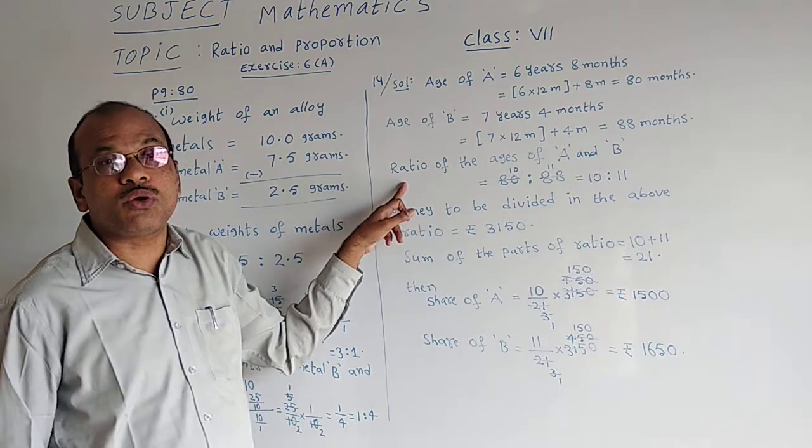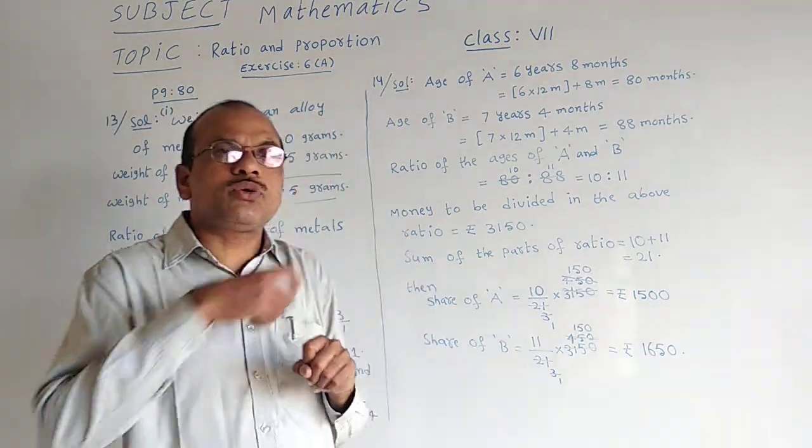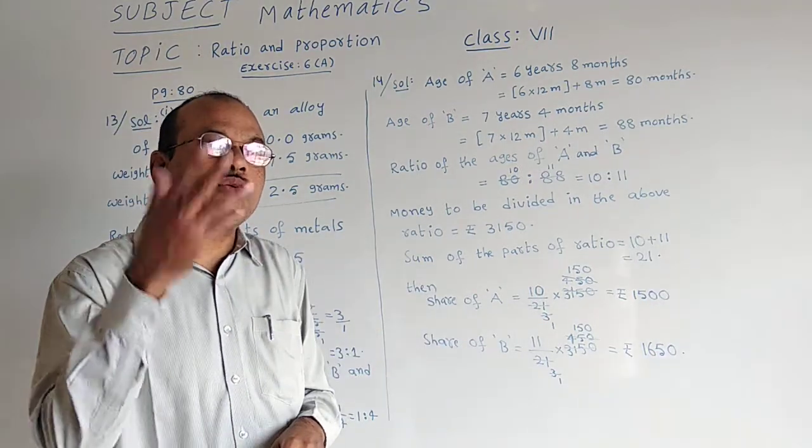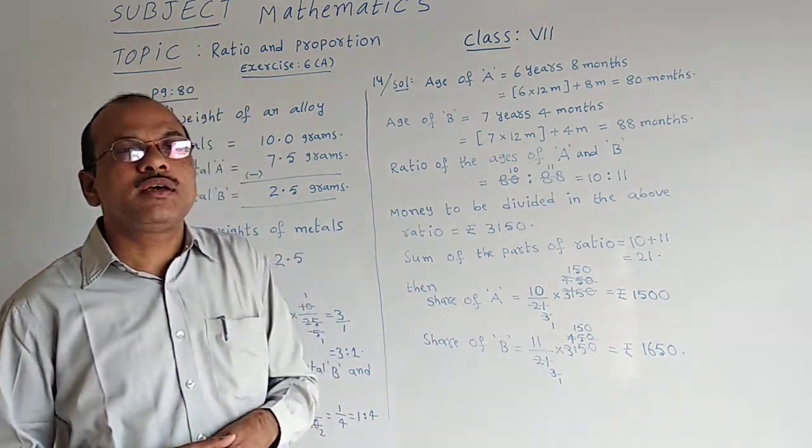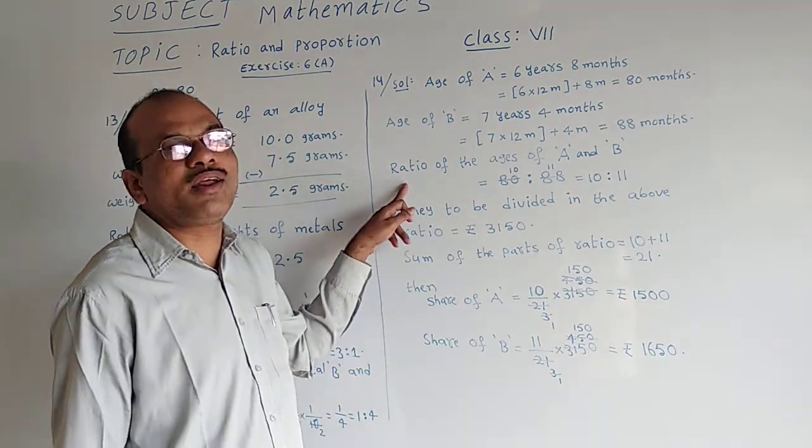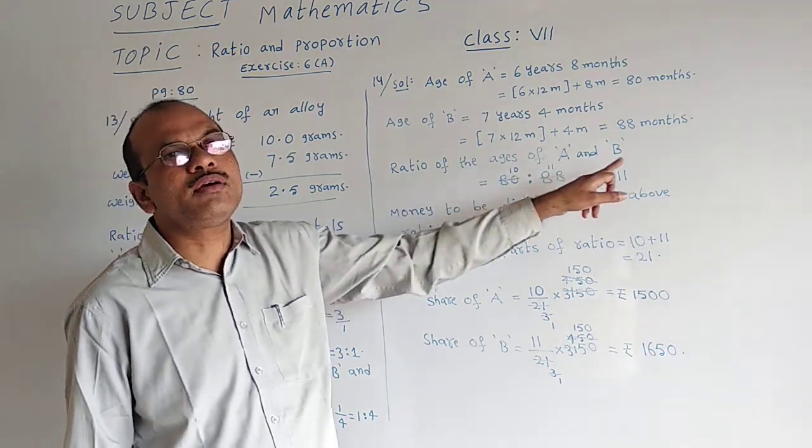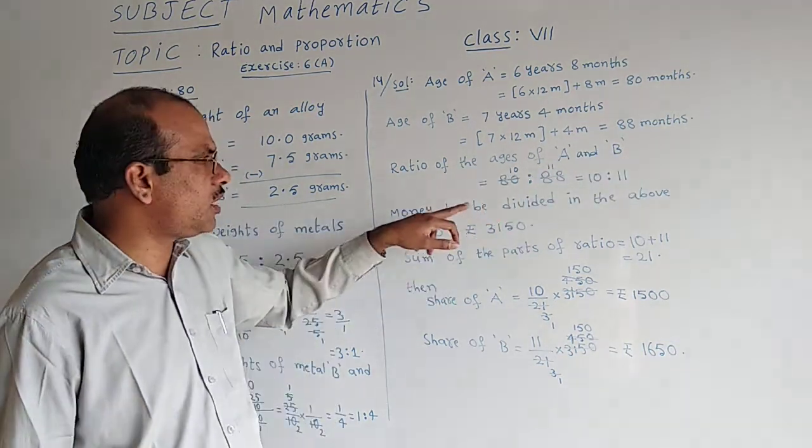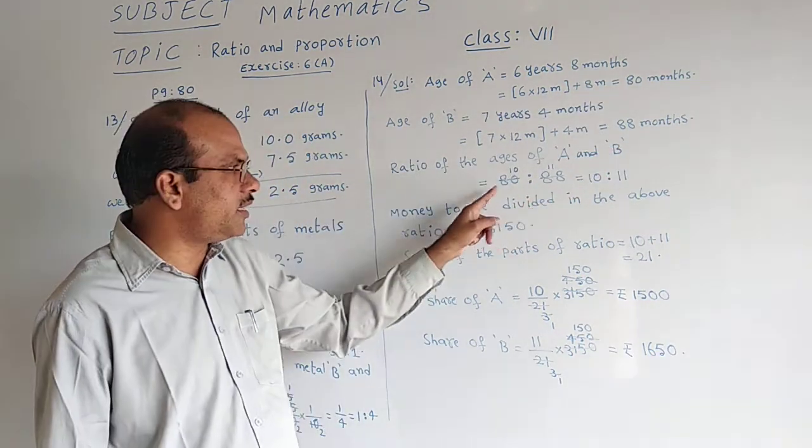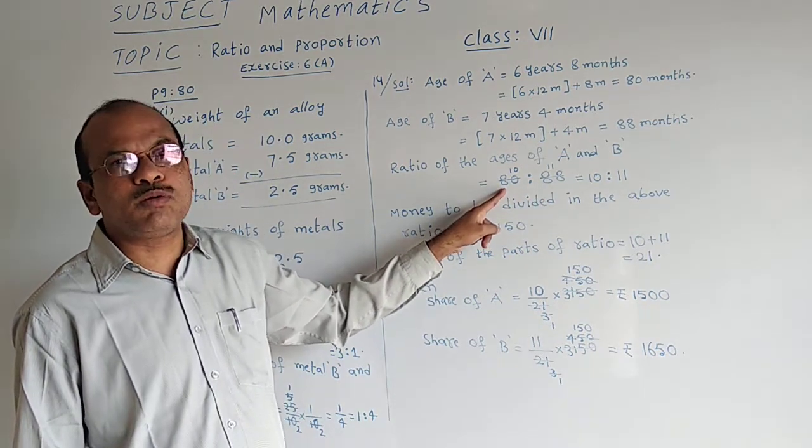Now we need to find ratio. Why? Because they said some money is going to be given and they should get the shares according to the ratio of their ages. Ratio of the ages of person A and person B is equal to 80 is to 88. There is a common table.